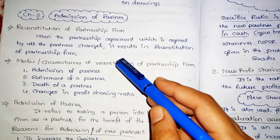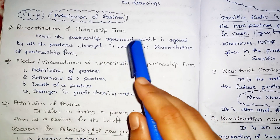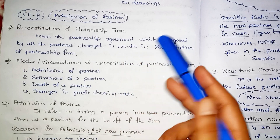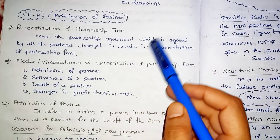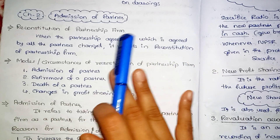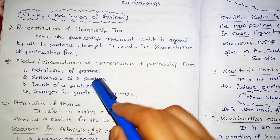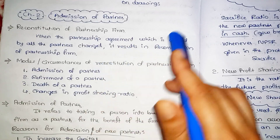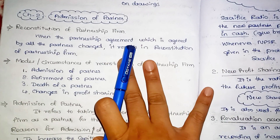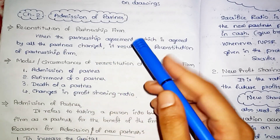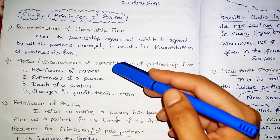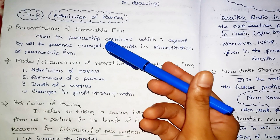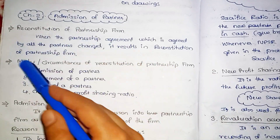Next is dissolution of partnership and dissolution of firm. Dissolution of firm means the firm is closed, but dissolution of partnership means the partnership agreement is closed. That is why we need to do reconstitution.